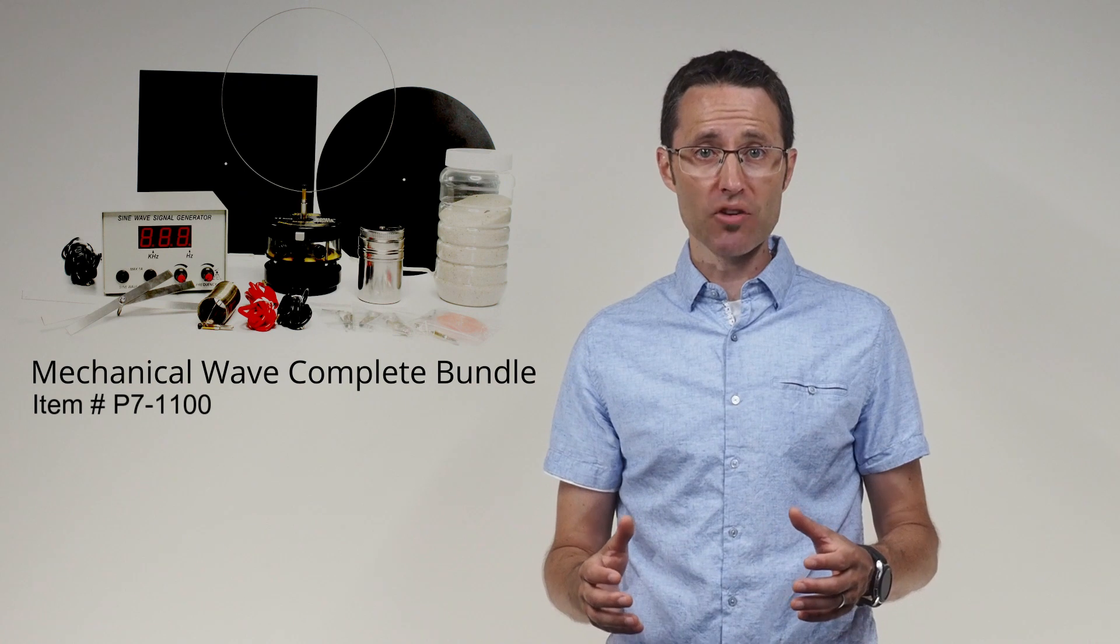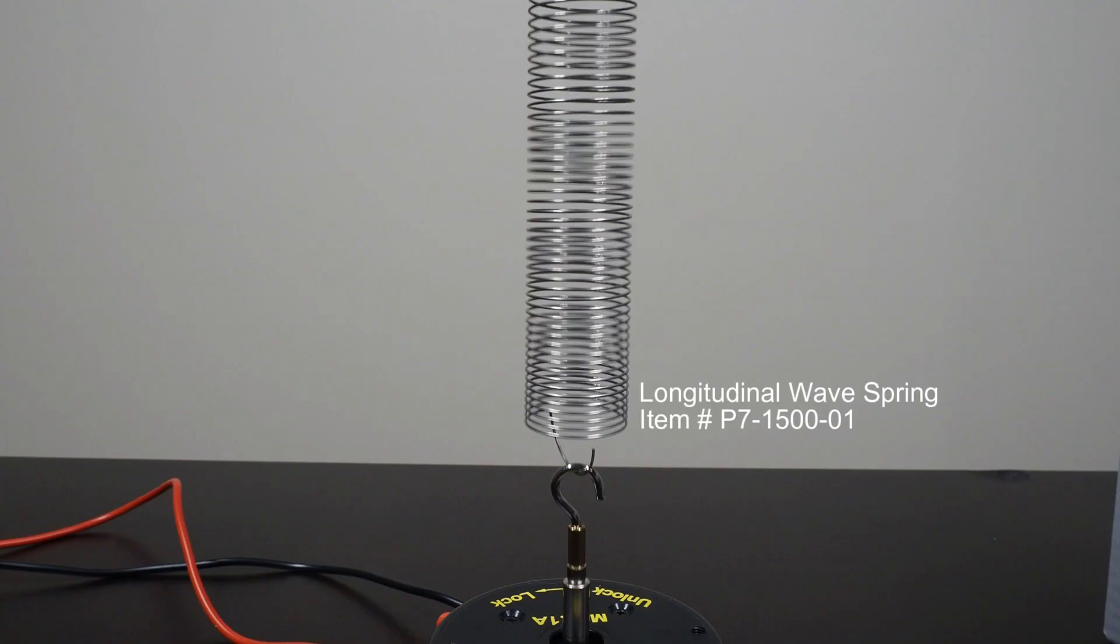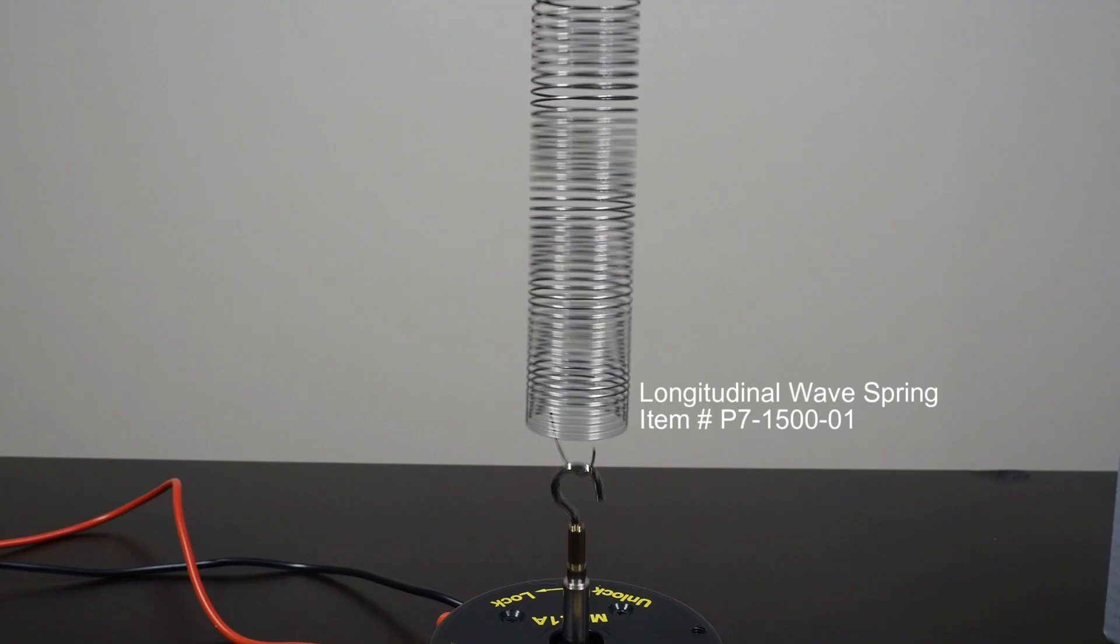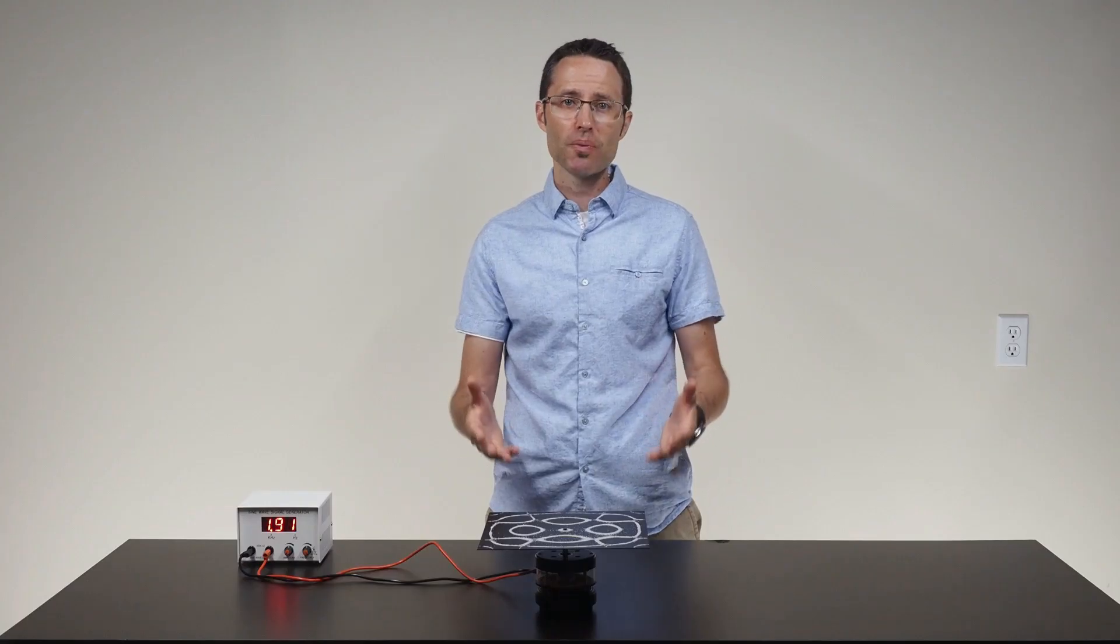The mechanical wave complete bundle has ways to demonstrate other types of standing waves including metal strips with one fixed end and one free end, longitudinal standing waves within a stretched string, circular standing waves, and of course two-dimensional standing waves using the included Chladni plates.